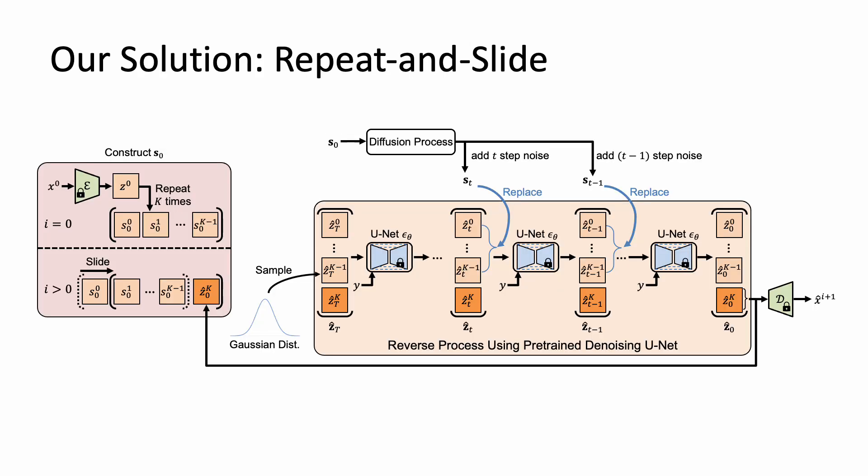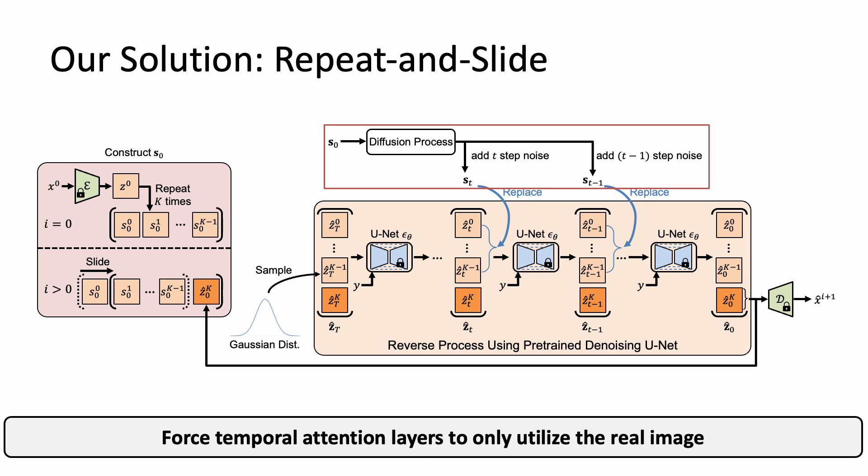Inspired by this observation, we propose a repeat-and-slide strategy. We first construct a queue of k frame latents, S0. Then in each reverse step, we replace the first k frame latents in hat zt by st. Thus, the temporal attention layers are forced to utilize the information from the real image S0.